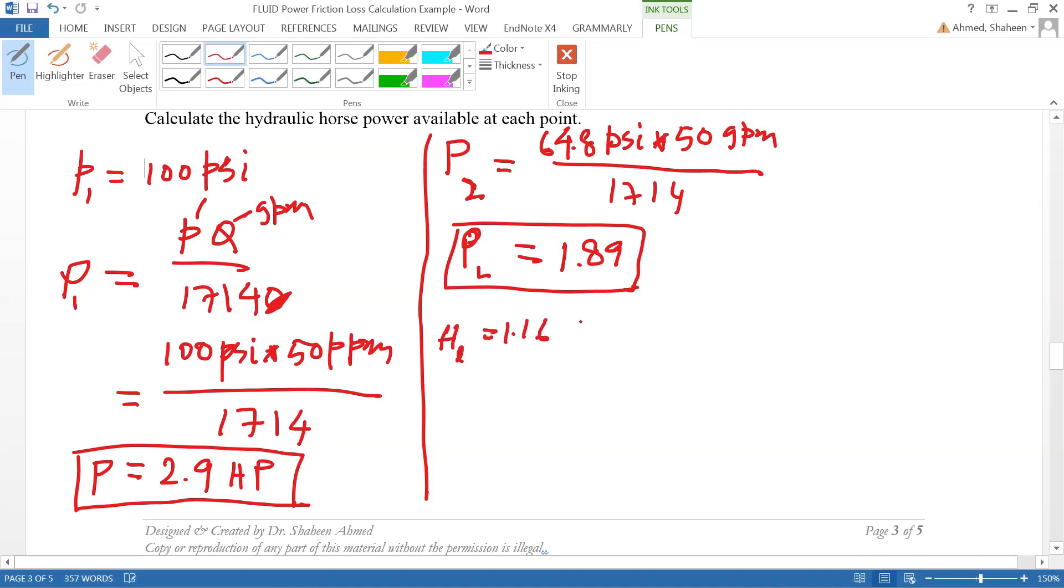If I convert this to pressure, it's about 0.5 psi. So the loss of power, if you want to calculate that, that would be 0.5 psi times 50 divided by 1714. So that number I got was 0.0146 psi.